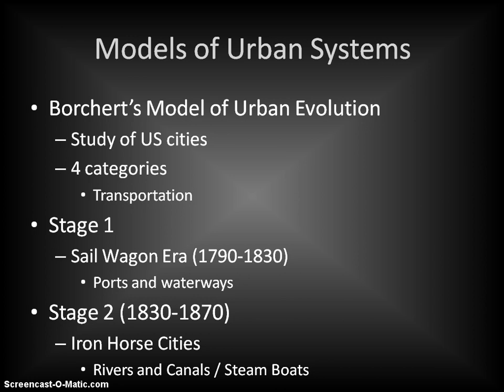We're going to look at what's called Borchert's Model of Urban Evolution. This is a discussion on the importance of particular cities and how, as time goes on, certain cities are going to be important based upon certain characteristics. It's a study of U.S. cities specifically, and that's going to be one of the criticisms — it doesn't necessarily apply to other places because it's specific to the United States and its history and evolution as a country. We're looking at four different time periods and the significance of cities in each. Borchert focuses primarily on different transportation methods and how that impacts which cities are important during each time period.